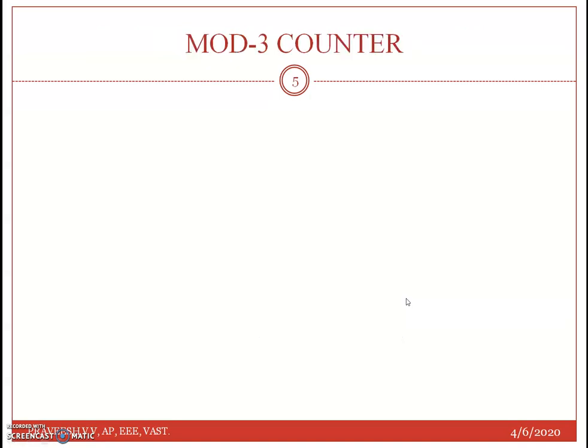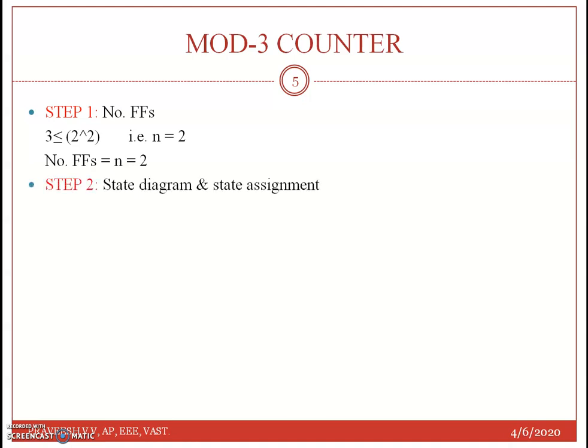Now we have a simple example: design a mod-3 counter. The mod value is 3. The first step is to determine the number of flip-flops. We need 3 less than or equal to 2 raised to N; the smallest value of N satisfying this is N equals 2, since 2 raised to 2 equals 4, and 3 is less than 4. So the number of flip-flops is 2.